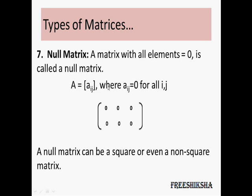Next is the null matrix, where all the elements are equal to 0. It could be a square matrix or not — it does not matter, but all elements must be equal to 0. The significance of the null matrix is that if you subtract one matrix from an equal matrix, just like 2 minus 2 equals 0, it gives you a null matrix rather than a simple 0.